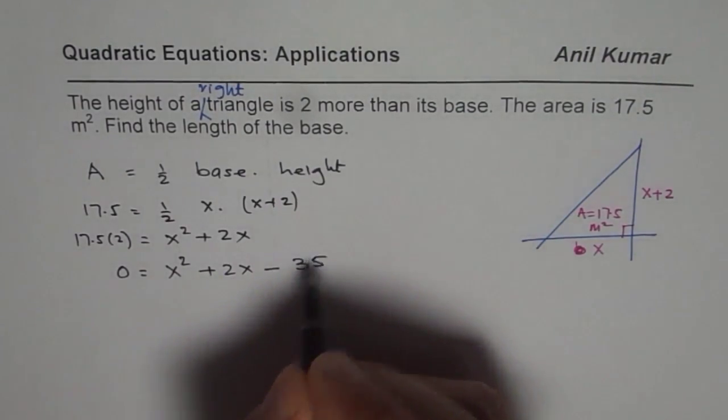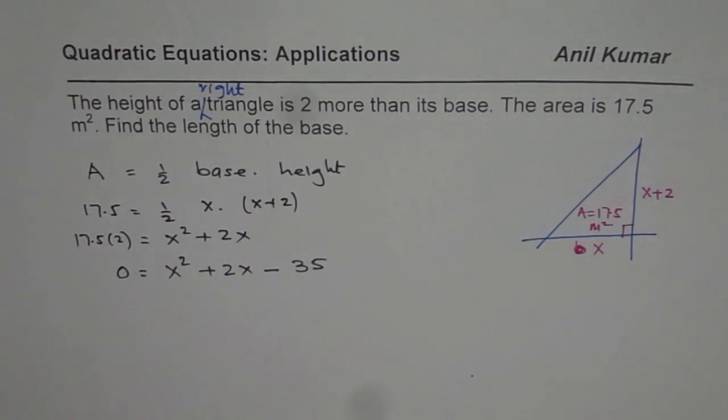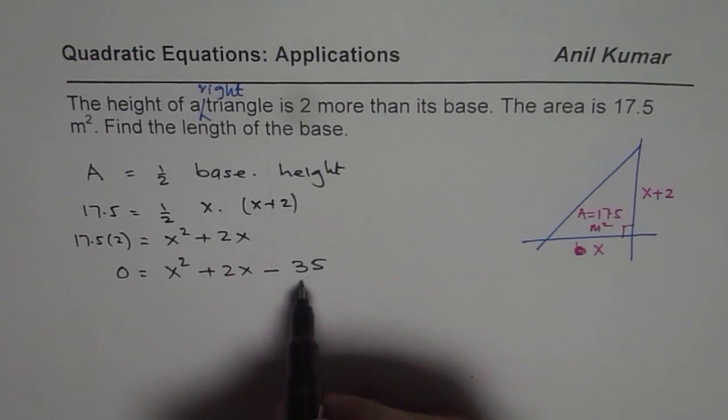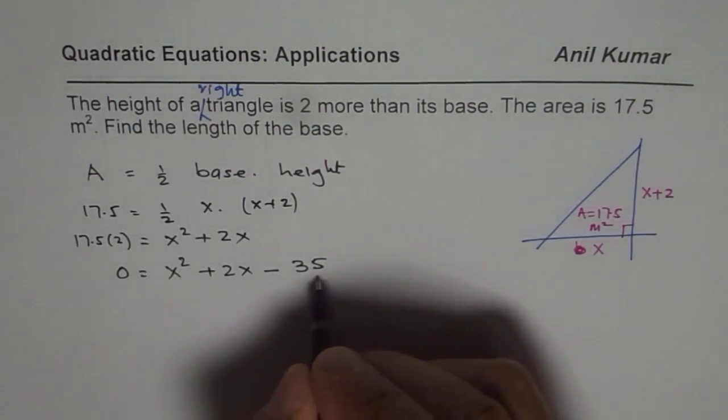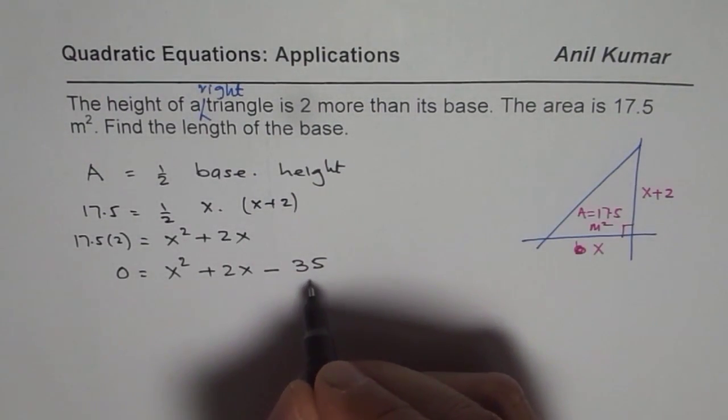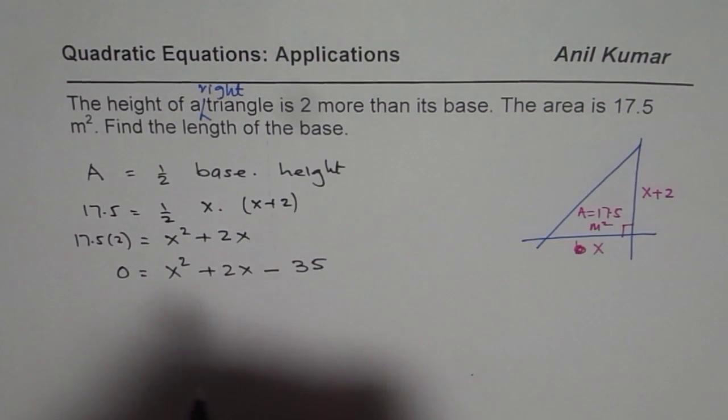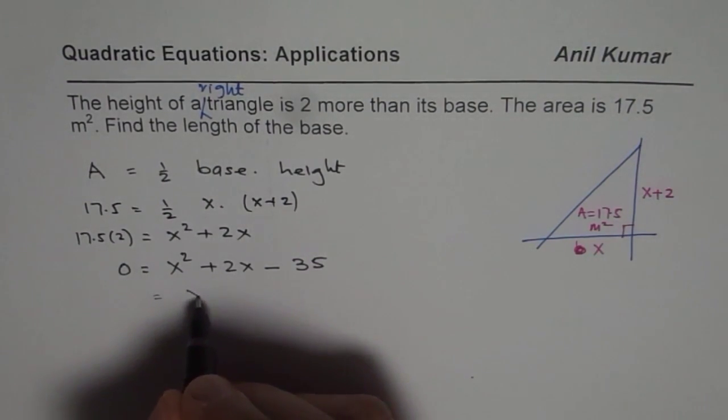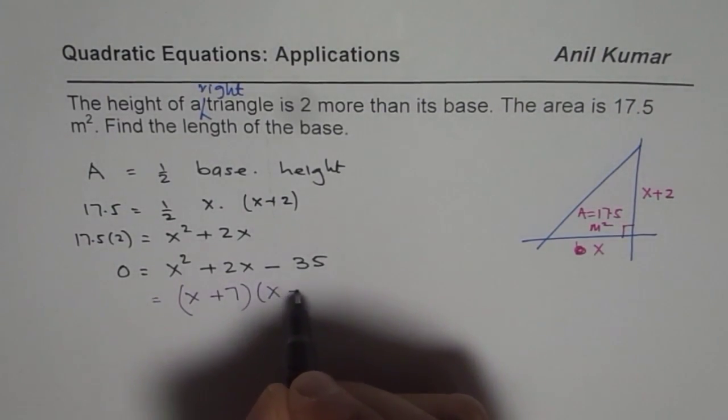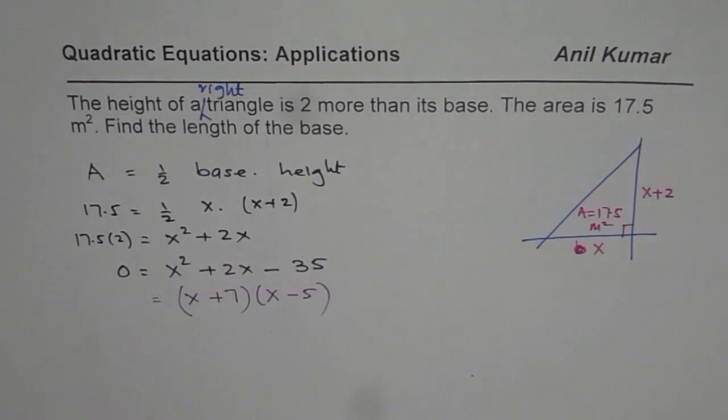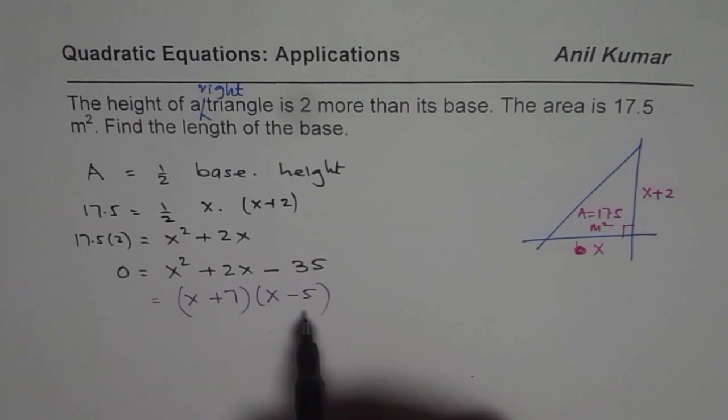Let us write 35 here. Now to solve this equation, you can either do factoring or use quadratic formula. To do factoring, we're looking for two numbers whose product is minus 35 and whose difference is 2. That could be 7 times 5. So we could write this as (x + 7)(x - 5). You can factor using the techniques learned already.